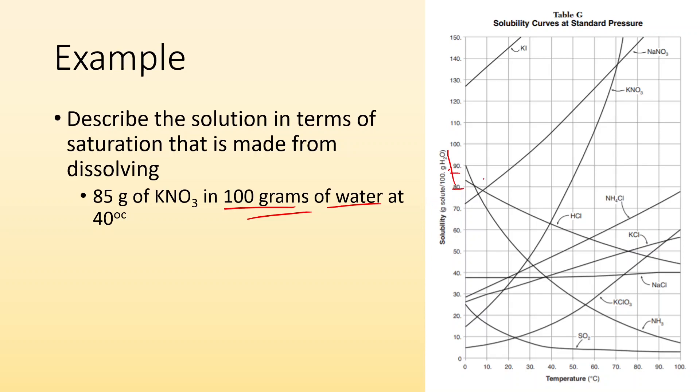85 grams. I go, all right, well, here's 80, here's 90, 85 is right there at 40 degrees Celsius. So I follow this 40 degrees Celsius line. 85 grams is right here. Here's the line for KNO3. I see that I am above that line. So that tells me that I'm supersaturated. I've created a supersaturated solution.